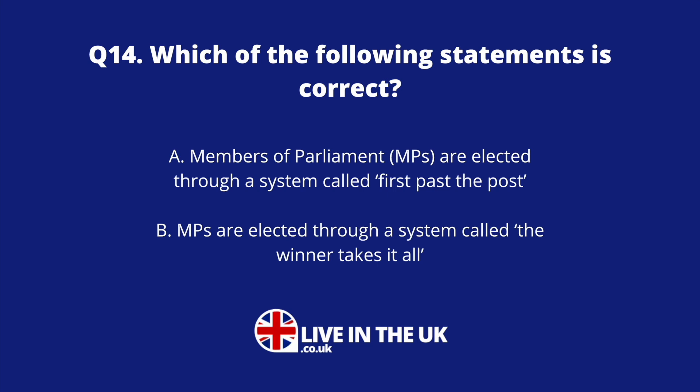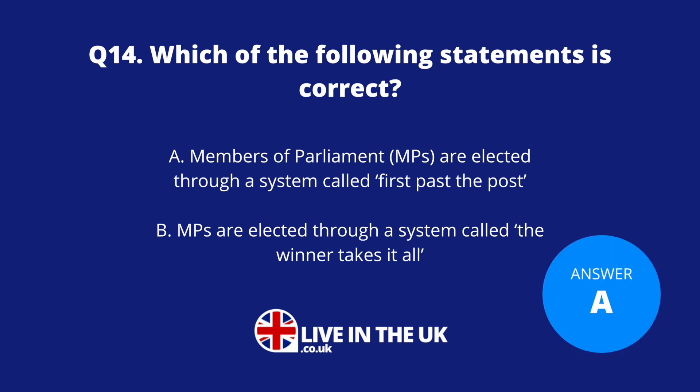Question fourteen: Which of the following statements is correct? A. Members of Parliament are elected through a system called first past the post. Or B. MPs are elected through a system called winner takes it all. The answer is A — first past the post. The term comes from horse racing: the first horse past the post wins, and similarly the party with the most votes wins the election in any given constituency.